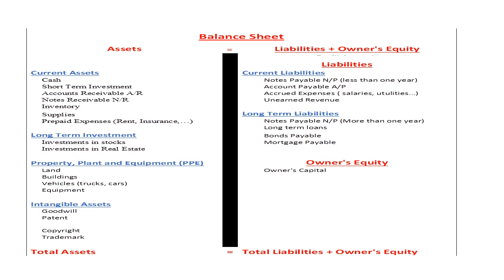Under liabilities and owner's equity: current liabilities include notes payable, accounts payable, accrued revenue, and unearned revenue. Notes payable due in less than one year are current liabilities; when due in more than one year, they are long-term liabilities. Long-term liabilities include long-term loans, bonds payable, and mortgage payable. Under owner's equity, we have the owner's capital.